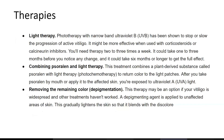Therapies: light therapy — phototherapy with narrow-band ultraviolet B — has been shown to stop or slow the progression of active vitiligo. It may be more effective when used with corticosteroids or calcineurin inhibitors. Treatment is needed two to three times a week, and it could take one to three months before you notice any change, and six months or longer to get the full effect.